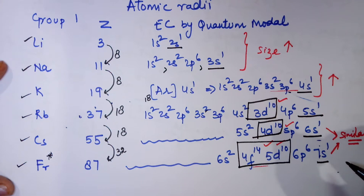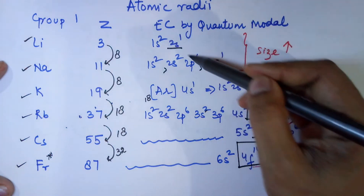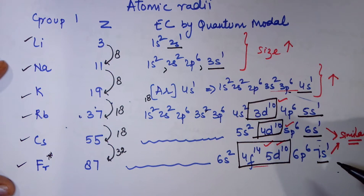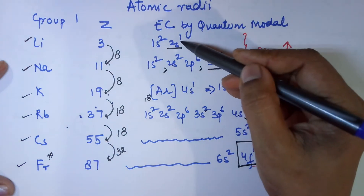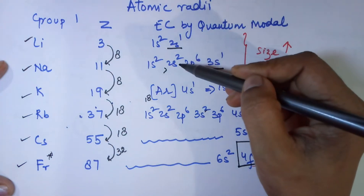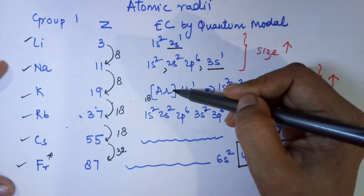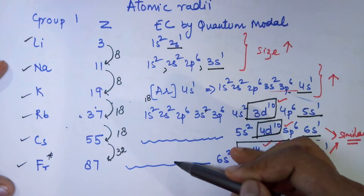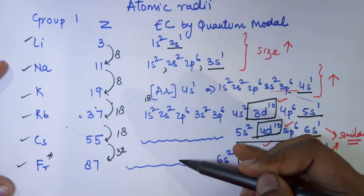As you have done in Class 10, size increases down the group. But what is different in Class 11 is that we say size increases down the group, but not regularly. This means the increase is not equal — if there is an increase of 10 units going from lithium to sodium, it is not the same 10 units increase for each subsequent pair. The increase is not regular.